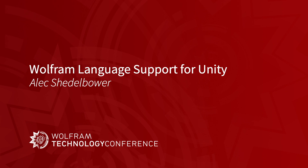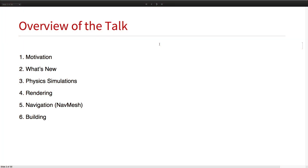Let's start with a quick overview of what we're going to talk about. First, we're going to go into the motivations of Unilink, then discuss what's new this year from last conference, then jump into some examples of physics simulations, lighting and rendering, navigation with the Unity NavMesh, and building Unity projects from the Wolfram language.